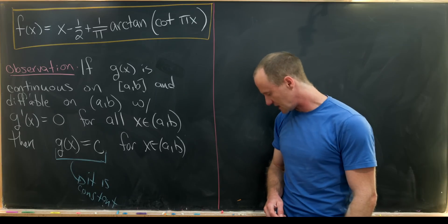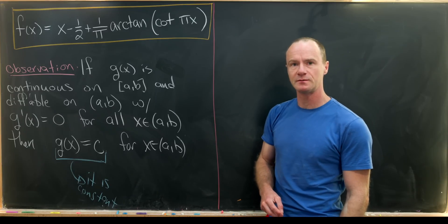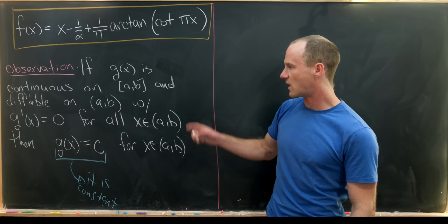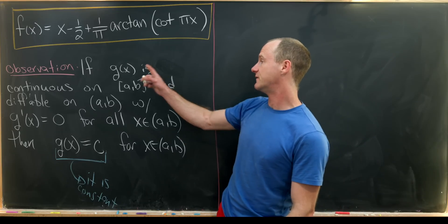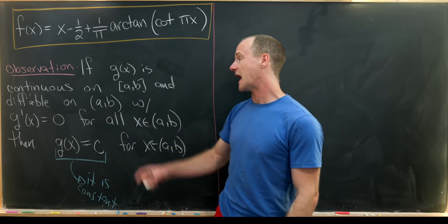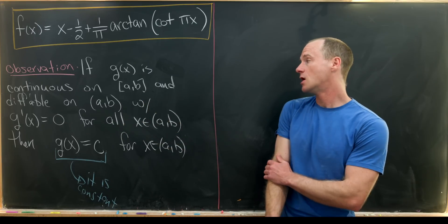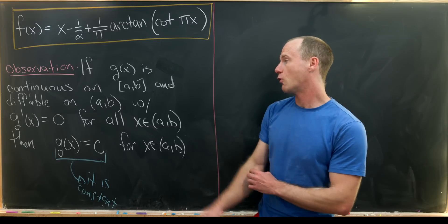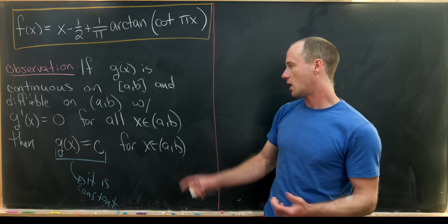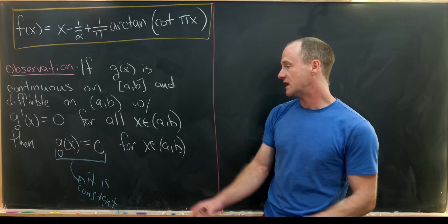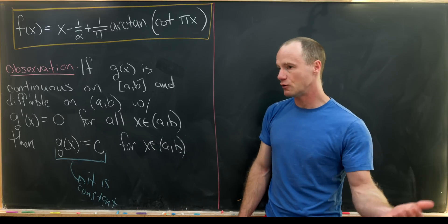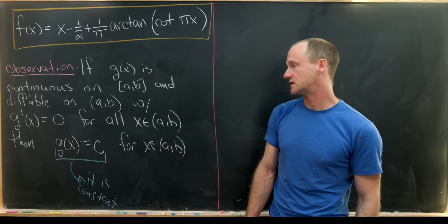By arctan, I mean the inverse tangent function. Now before we start to uncover what this function is, we'll prove the following observation. That says if g of x is continuous on a closed interval [a, b] and differentiable on the open interval (a, b), where g prime of x equals zero for all x on (a, b), then g of x is in fact equal to a constant. In other words, if you have a derivative of zero, then you have a constant function.